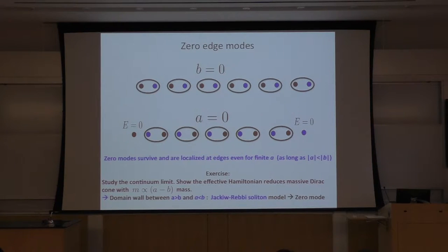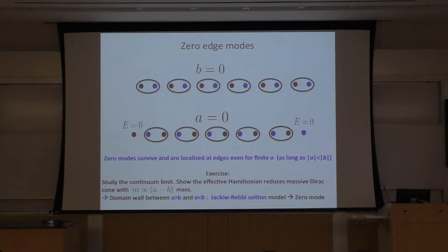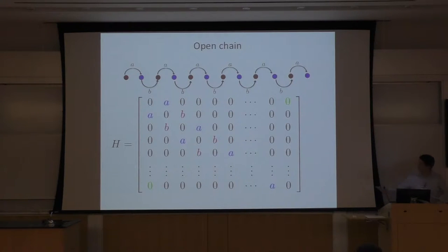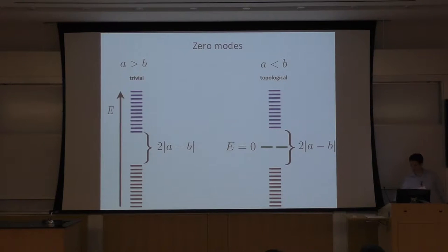For the other case where A is zero and B is non-zero, site two can hop to site three because B is non-zero, but site one cannot hop to site two. So sites one and two are separated. When A is zero, the Hamiltonian has zeros at those entries, giving a bunch of two-by-two matrices except for site one and the last site, where I have exactly zero. So I have two exactly zero modes for this limit.